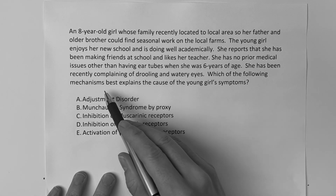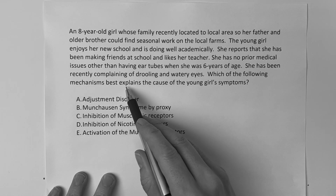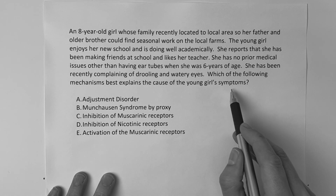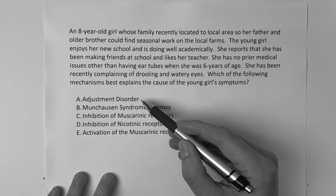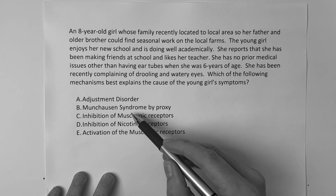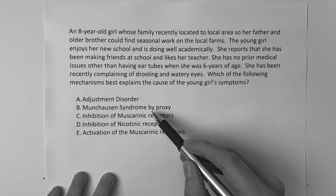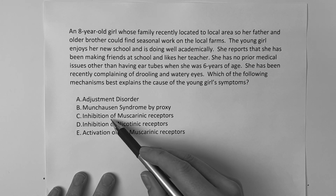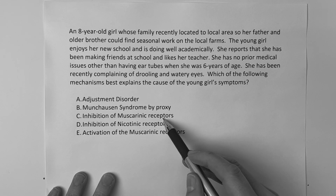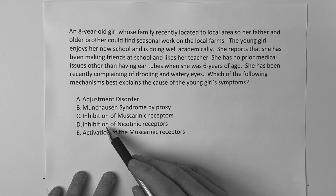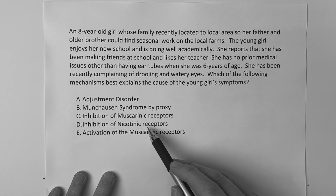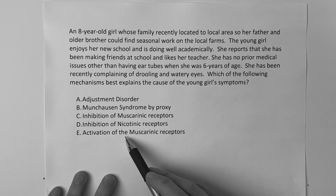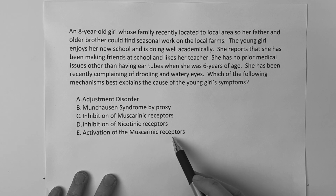The question reads: which of the following mechanisms best explains the cause of the young girl's symptoms? Is it A, adjustment disorder; B, Munchausen syndrome by proxy; C, inhibition of muscarinic receptors; D, inhibition of nicotinic receptors; or E, activation of muscarinic receptors?